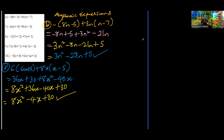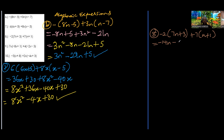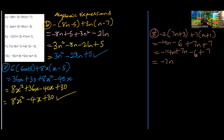Number 8: negative 2 into 7n plus 3, plus 7 into n plus 1. Negative 2 times positive 7n gives negative 14n, and negative 2 times 3 is negative 6. Then 7 times n is 7n and 7 times 1 is 7. Combining: negative 14n plus 7n gives negative 7n, and negative 6 plus 7 gives positive 1. The answer is negative 7n plus 1.